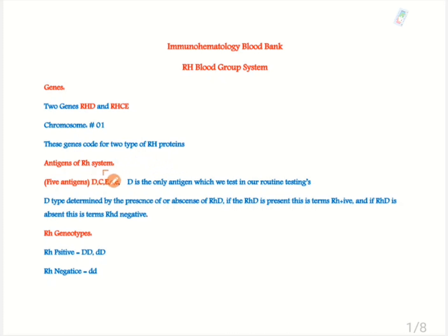Antigens of RH system: There are 5 antigens - D, C, E, c and e. In our routine testing in blood banking we only test the D antigen. D type is determined by the presence or absence of RHD. If the RHD protein is present this is known as RH positive. And if the RHD is absent this is known as RH negative.